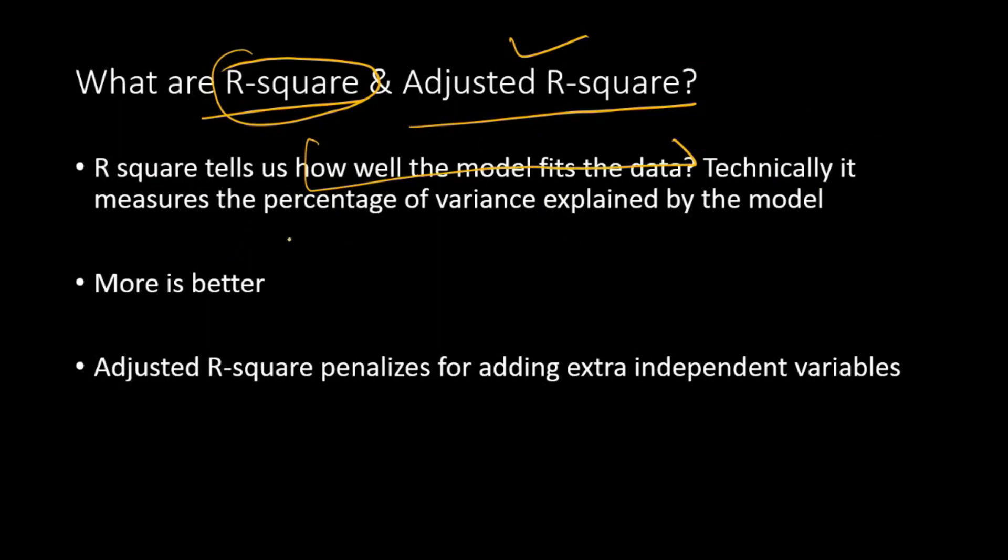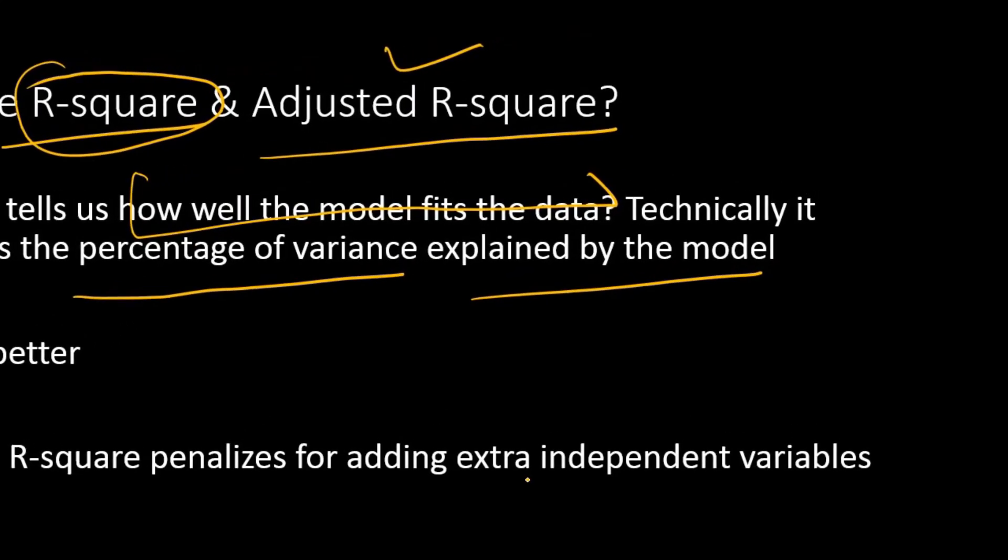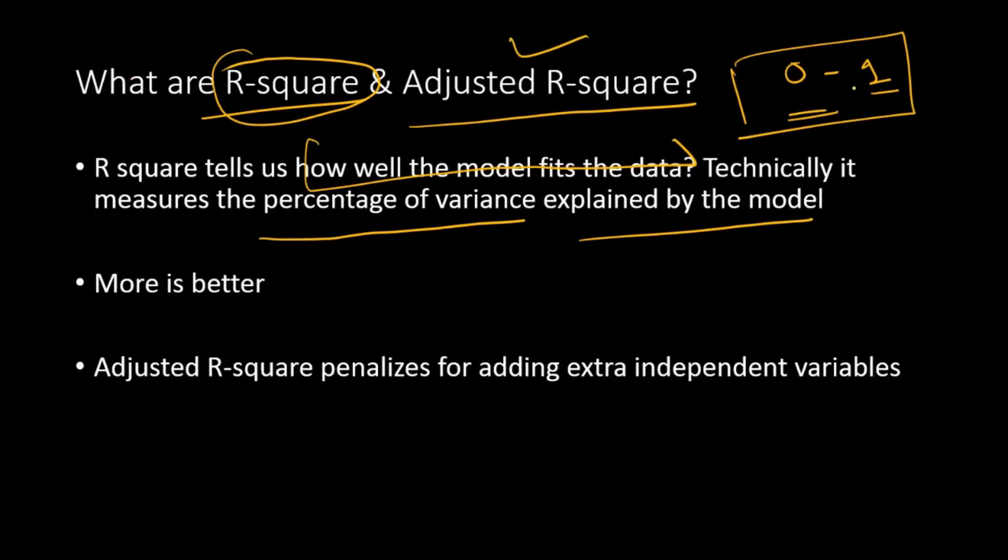This is the first part of the answer, but technically it means something different. Technically, it measures the percentage of variance explained by the model. You have dependent and independent variables, and you're modeling the dependent variable—the variable of interest or target variable. How much of the variation, which is measured in terms of variance, is being explained by your model? That is your R-square. It always lies between 0 and 1. Sometimes it is negative, though it cannot be negative—if it is negative, there is something seriously wrong with the model. The closer it is to 1, the better the model.